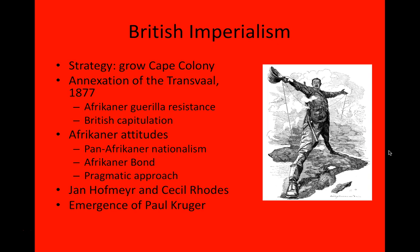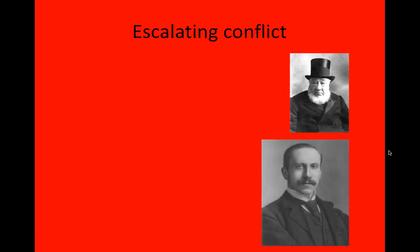This moderate position occupied by Hoffmeyer was offset to a great extent by the more hardline positions taken by the newly emerged president of the Transvaal after the re-establishment of independence in 1881. The man who became president was Paul Kruger — and Paul Kruger, like Cecil Rhodes, is one of the truly towering figures of this whole period. I'll switch the slide because this is a picture of Paul Kruger.